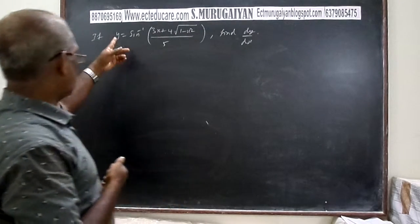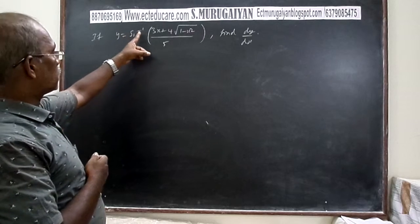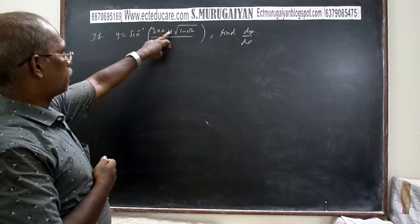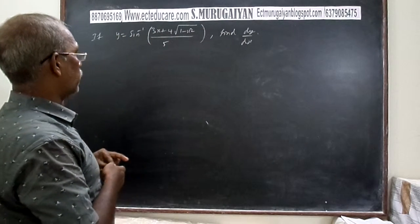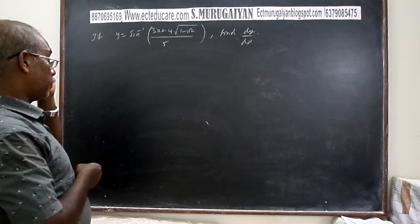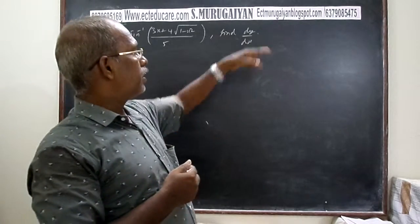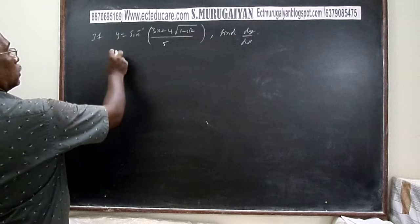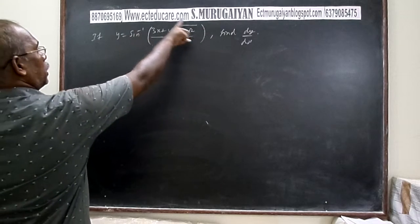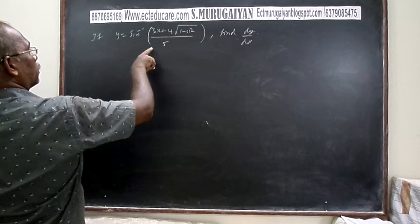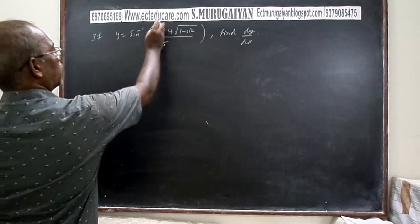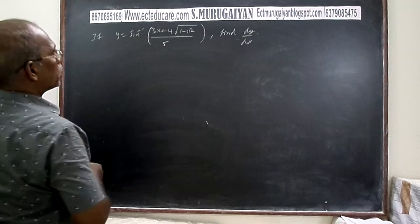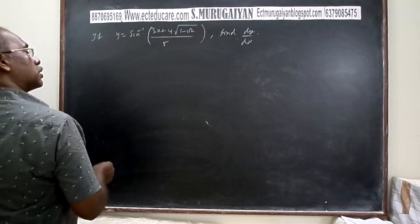The first question is: y equals sin inverse of (3x + 4√(1 - x²)) / 5. We have to find dy/dx by first simplifying the expression using a suitable substitution.